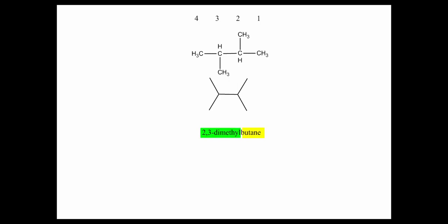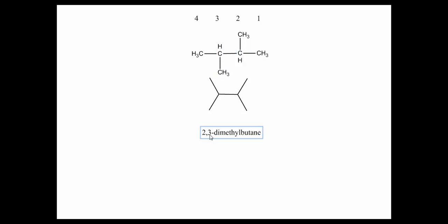Here is a symmetrical molecule: 2,3-dimethylbutane. Counting from either end, the longest consecutive chain is four carbons, with two methyl branches. Those methyl branches are at carbon two and carbon three. We name this 2,3-dimethylbutane: 'dimethyl' for the two methyl groups and 'butane' because the parent chain has four carbons.